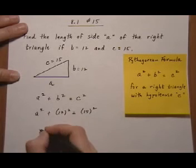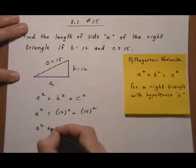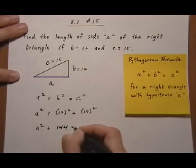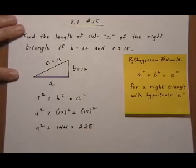So let's go ahead and square these out. We get A squared plus 144 equals 225.